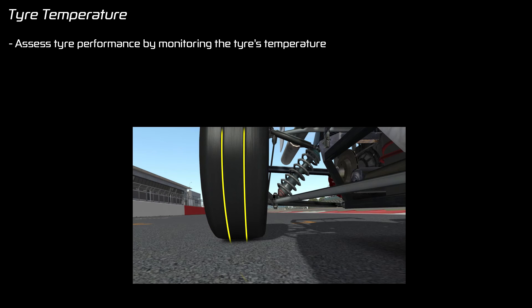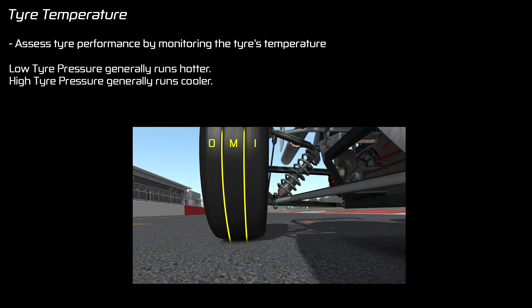So how do you figure out what pressure to run your tires at? There's one common feature in racing simulators which helps you monitor tire performance, and that is by reading the tire temperature. Normally the tires are divided into three vertical sections: the outside, the middle, and the inside of the tire. As you race there'll be slight differences in temperatures across the surface of the tire, and you can look at these differences to figure out how the tire is performing. In general, a tire with low pressure will run hotter and wear quicker, while a tire with high air pressure will be cooler. What you're aiming for is even heating across the surface of the tire.